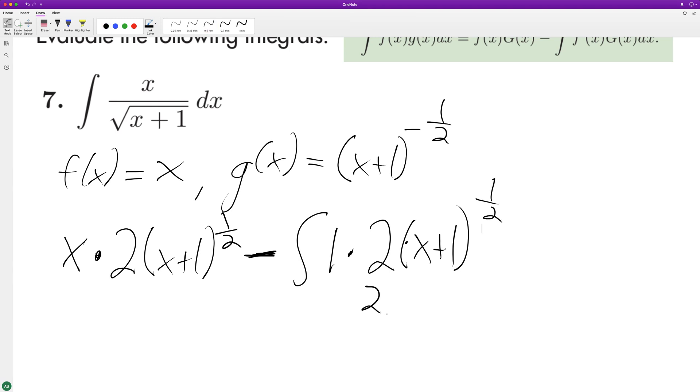So this becomes 2x times (x+1) raised to the one-half, or the square root, either way. Minus the integral of... this becomes three-halves, so two-thirds... four over three... so four-thirds.